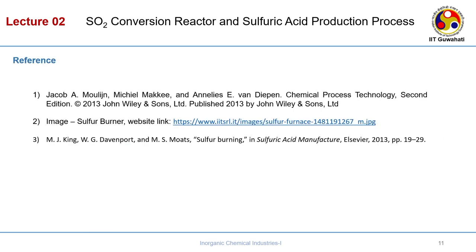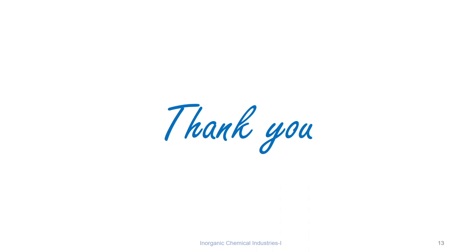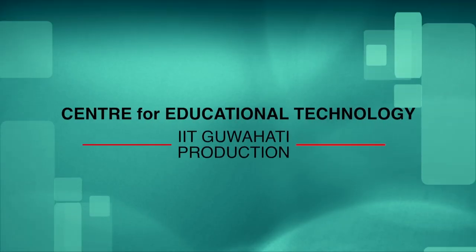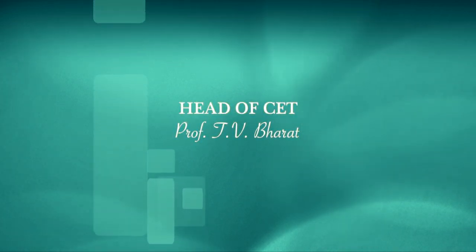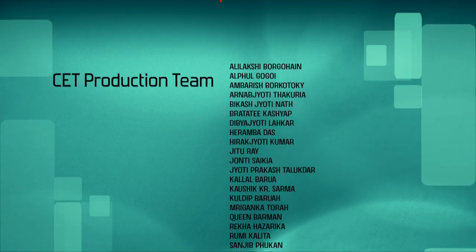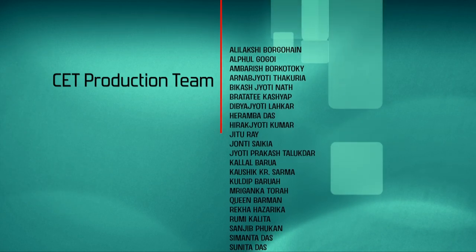This is what we have discussed for sulphuric acid. You should refer to the flow sheets, all of which are taken from the textbook by Jacob Moline. There is also a useful website link for the image of the sulphur burner, and a chapter on sulphuric acid manufacture from Elsevier where you can find modern catalysts and other processes. Thank you, and we will meet again in the next lecture.